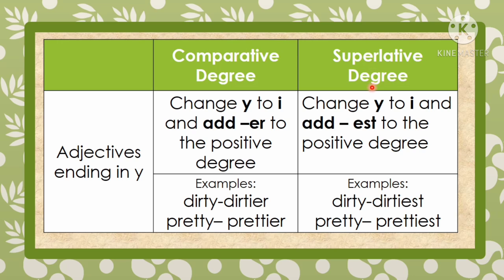For the superlative degree of adjectives ending in -y, change the y to i, then add -est. From the word 'dirty,' drop the y, change to i, then add -est, so 'dirty' becomes 'dirtiest.' The second example: 'pretty' — drop the y, change to i, then add -est, so 'pretty' becomes 'prettiest.'